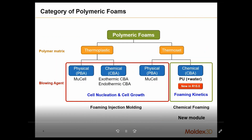When you talk about foaming, it can be divided into multiple different types. You have thermoplastic materials or your resin matrix, you have thermoset materials, and depending on the kind of blowing agent or process you have, there are multiple different categories for foaming. For example, you could have a thermoplastic material combined with a chemical blowing agent to cause chemical foaming, or you could have a physical foaming process happening like MuCell.